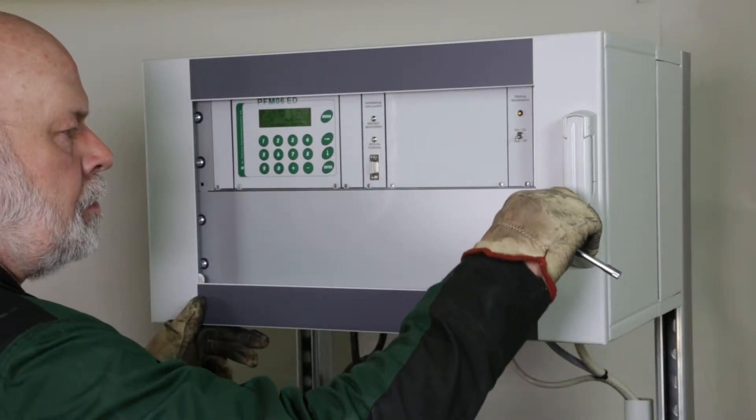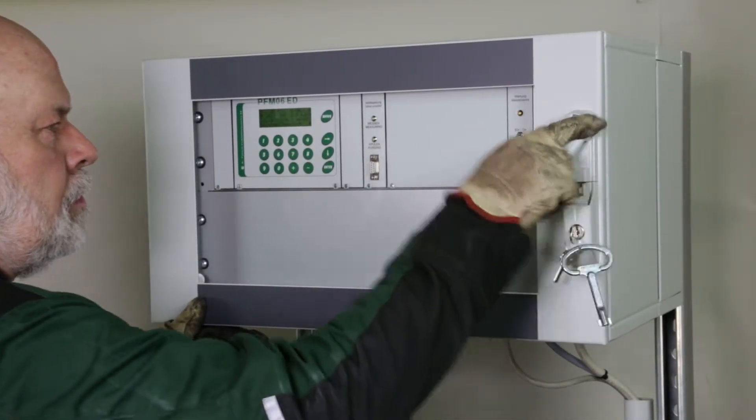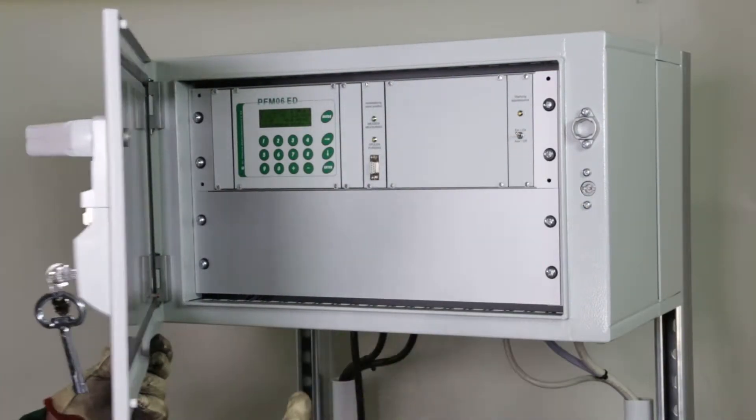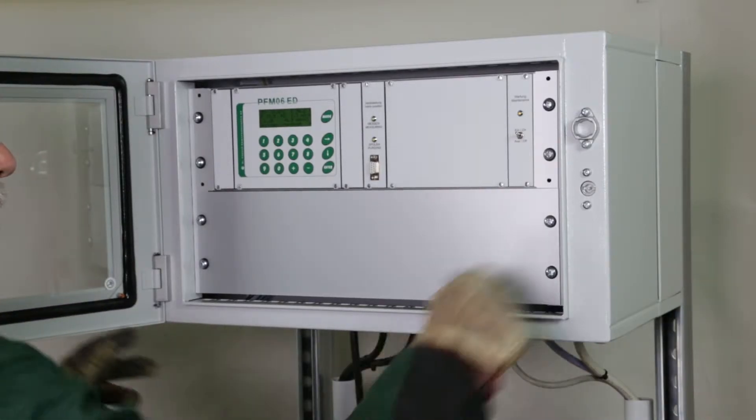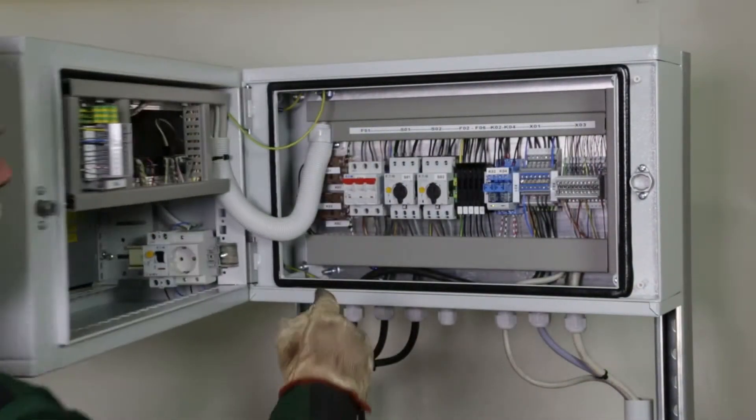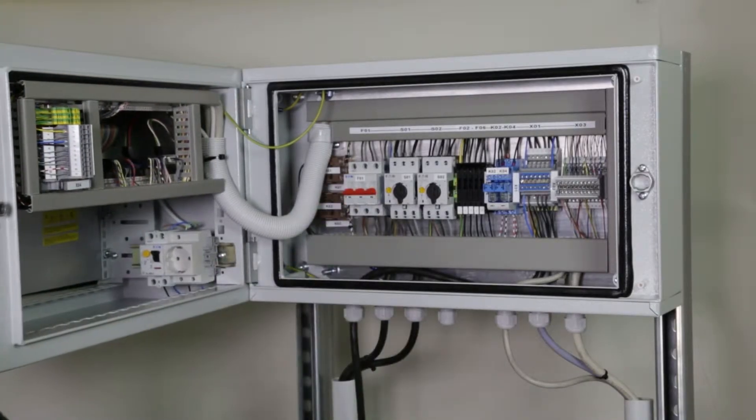Check the values for plausibility monthly. Readjust the flows if necessary. Check and clean or change the filters of the blowers and the sampling probe ventilation regularly. Clean the sampling probe every three to six months.